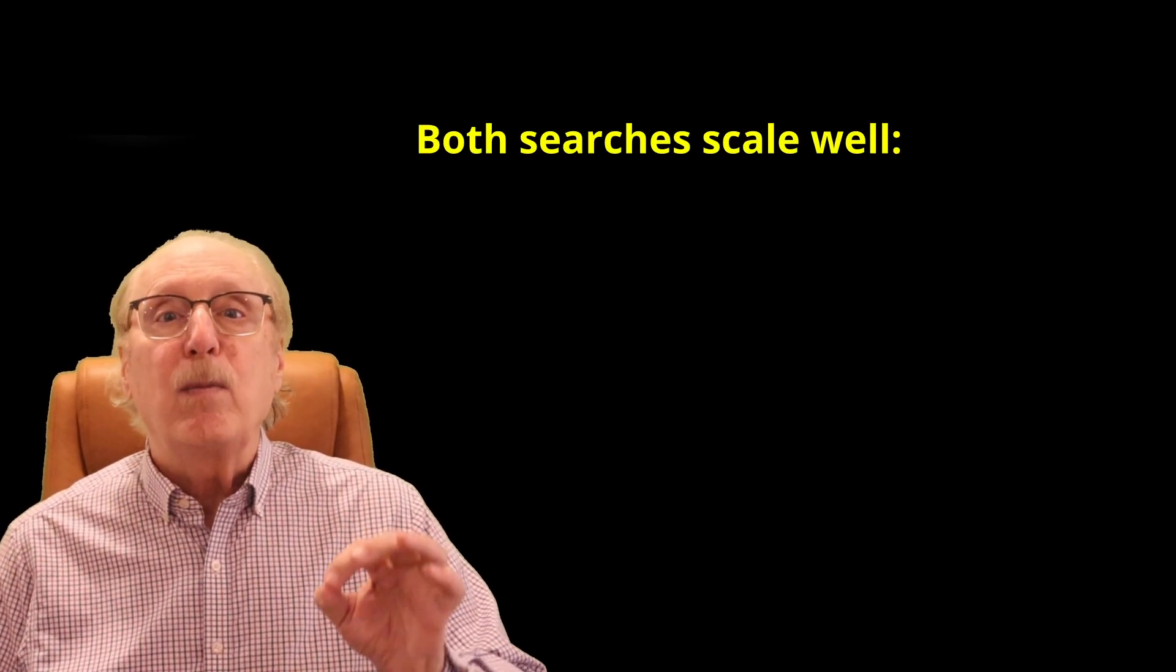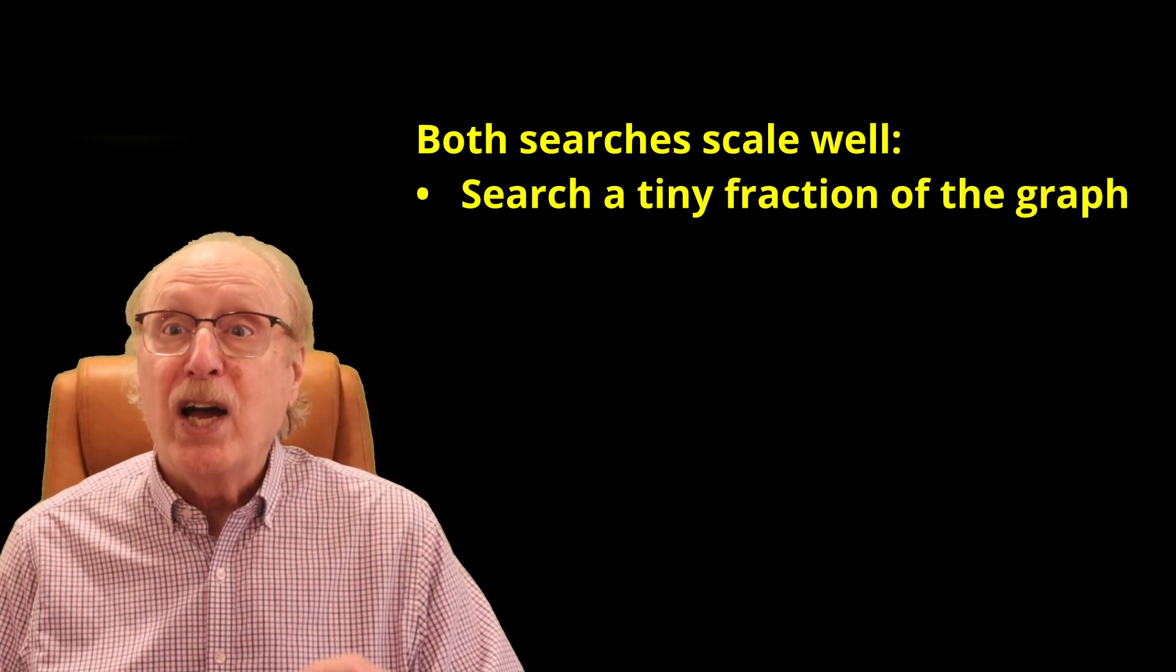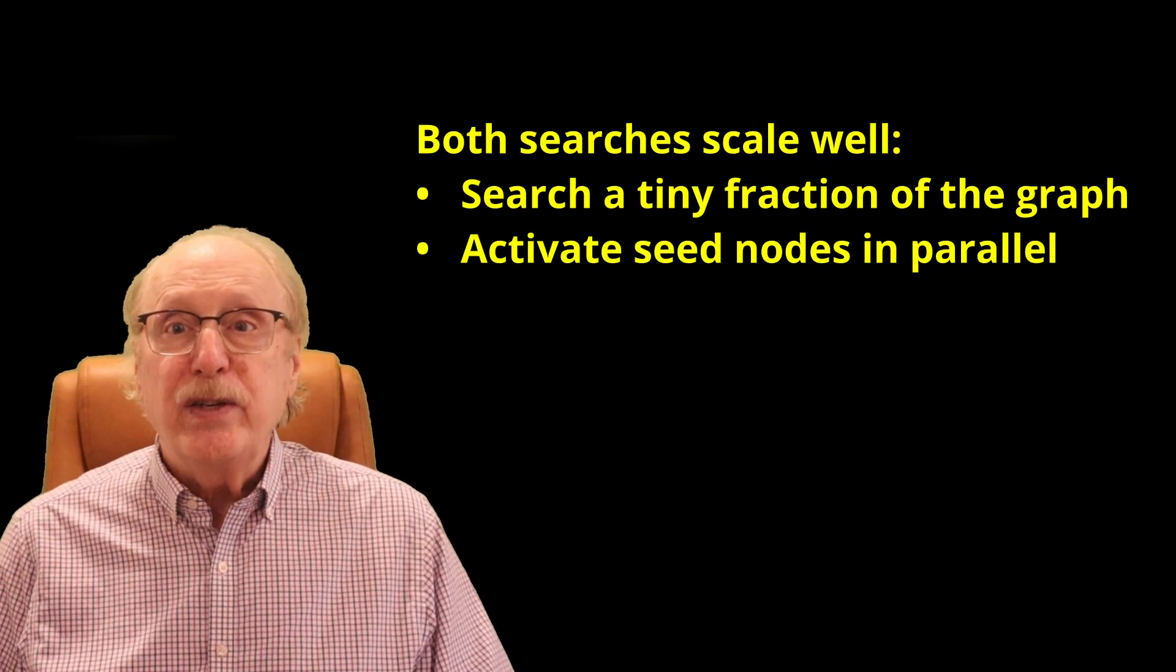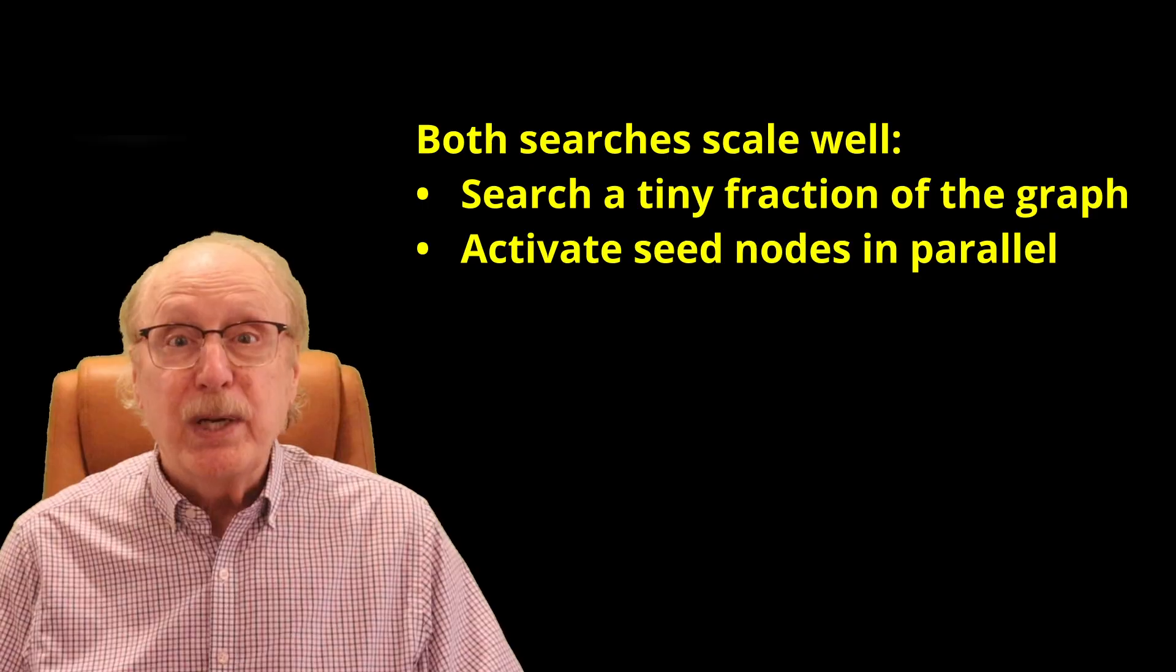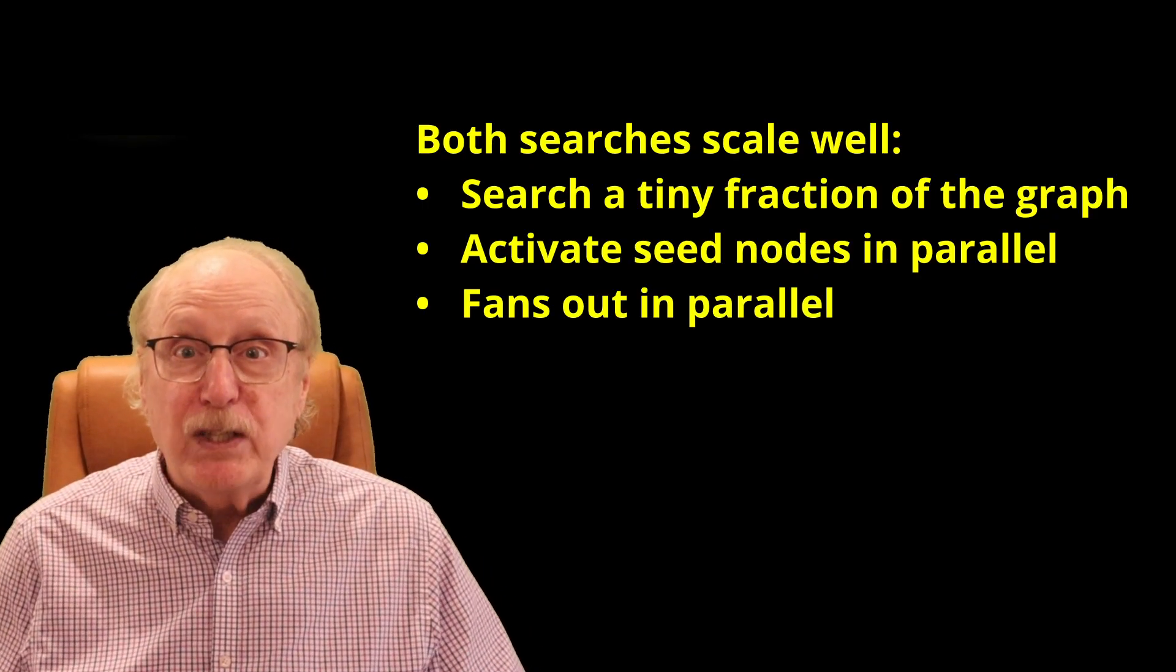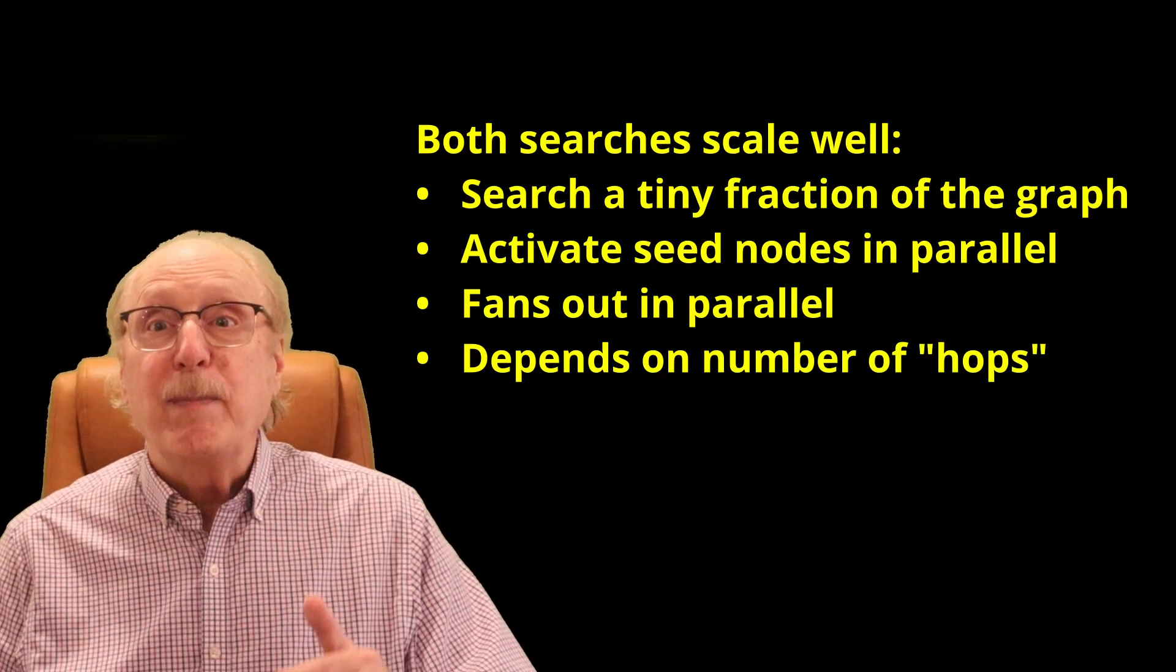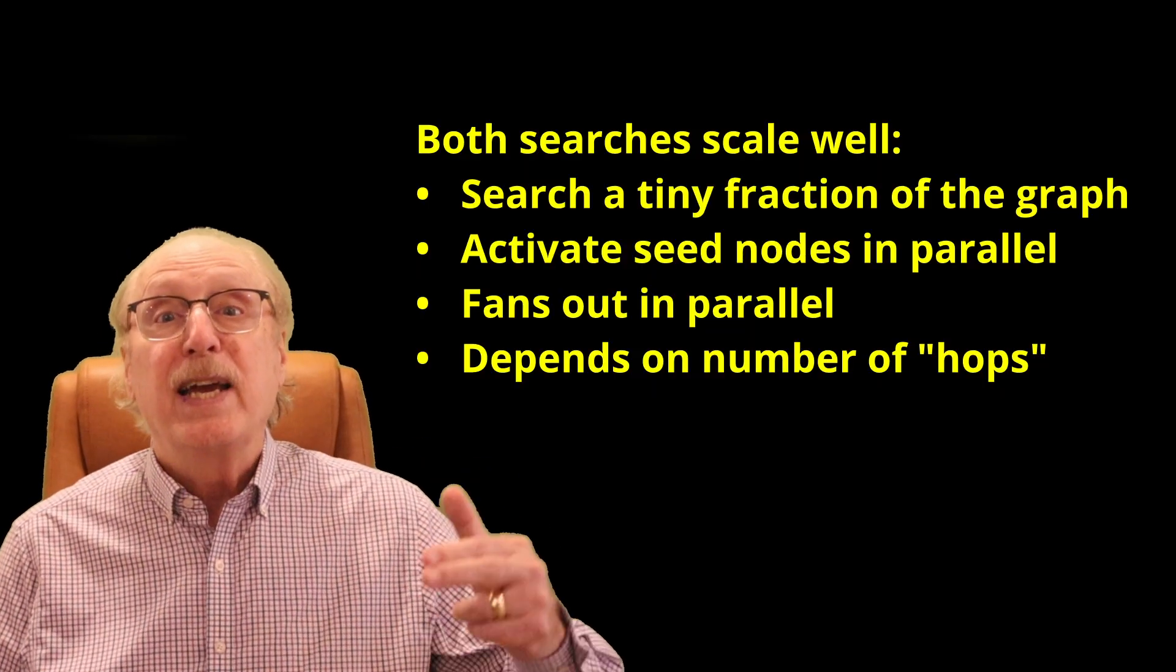Here's the important point regarding energy usage. Both of these searches scale beautifully. Why? Because each searches only a tiny portion of the graph. All the seed nodes, the initial search inputs, can be activated in parallel. Then each node fans out signals across all of its relationships simultaneously. So overall search time depends linearly on the number of hops and nothing else.